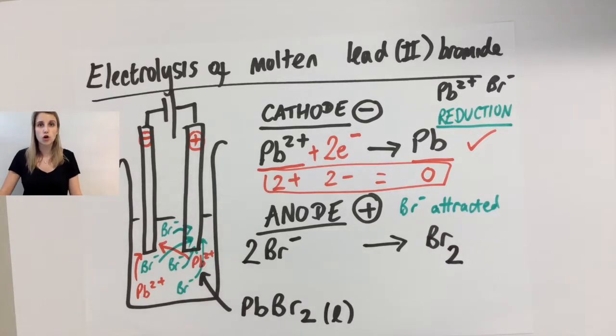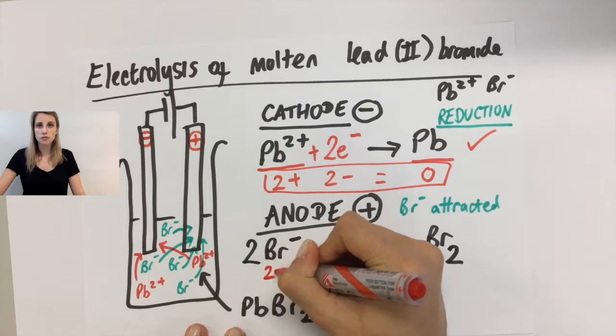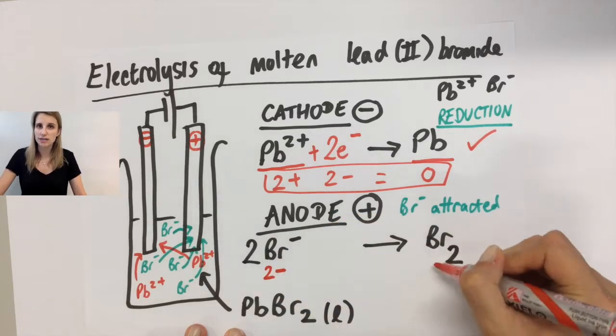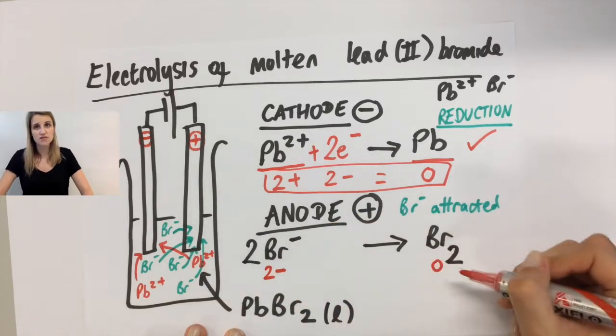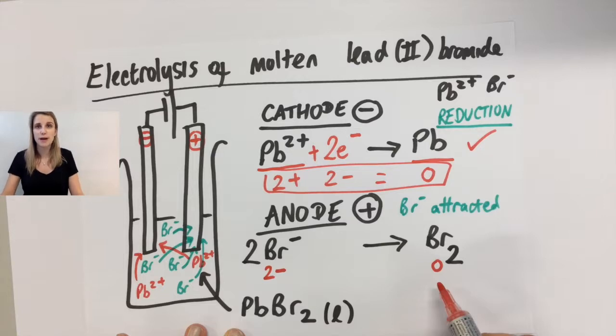On the left hand side, I've got 2Br-, so that means that the charge overall on that side is 2-. On the right hand side, I've just got Br2. That has no charge attached to it.